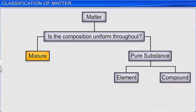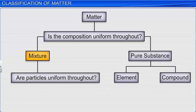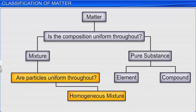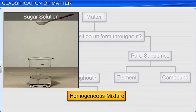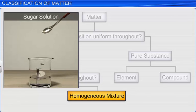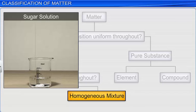Mixture can be classified further based on the uniformity of the particles present in it. If the particles are distributed uniformly throughout the solution, then it is a homogeneous mixture. For example, sugar solution is a homogeneous mixture because sugar particles get distributed uniformly throughout the solution.